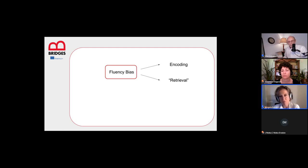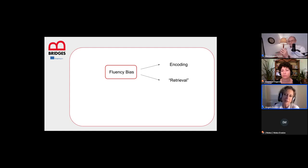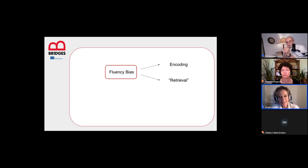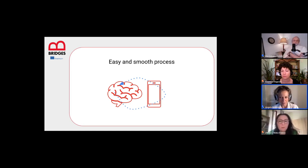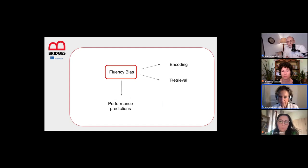If you re-read information and then make predictions about what you'll remember in a week, those predictions will likely be inflated — and that's demonstrated abundantly in the literature. Easy access to information is very likely to produce a fluency bias because it's so easy to find information on the phone rather than in our brain, leading to wrong performance predictions.